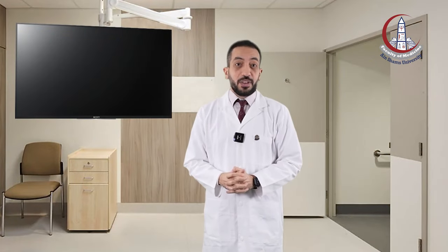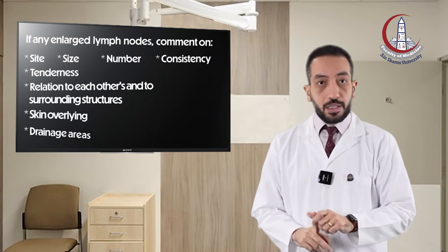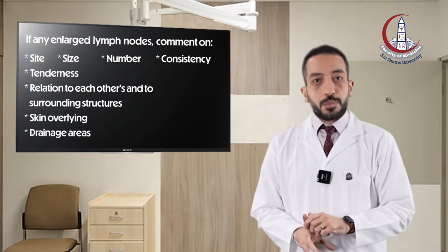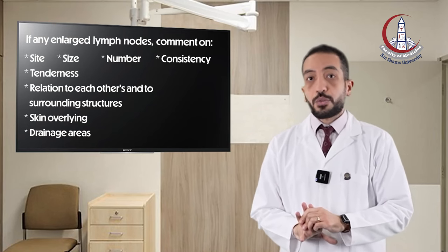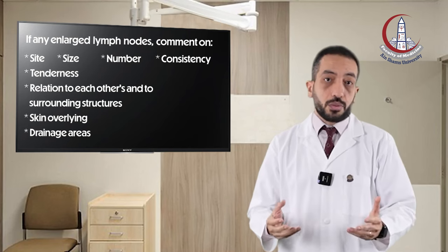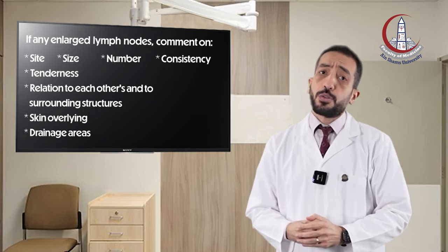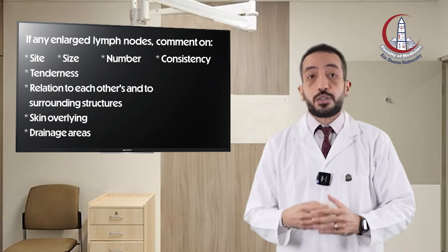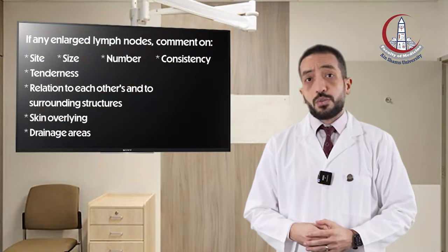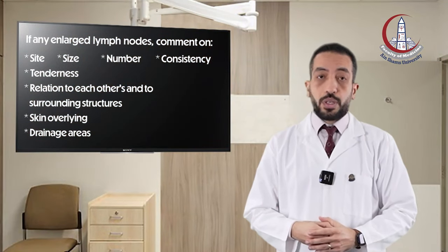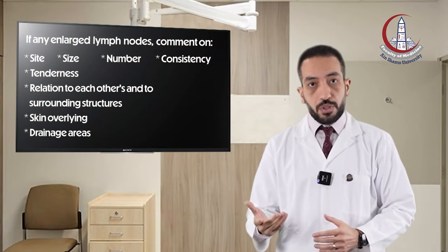At the end of any lymph node examination, if you found any enlarged lymph nodes, don't forget to comment on the following: the number of enlarged lymph nodes, their site, their size approximately in the largest dimension, and whether they are matted together or discrete — the relation of the lymph nodes to each other. Also note the relation to surrounding structures, whether they are freely mobile or fixed, and the consistency — whether they are hard, firm, or soft.